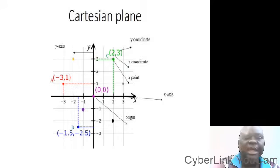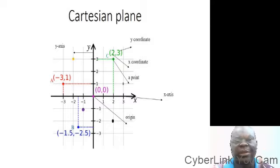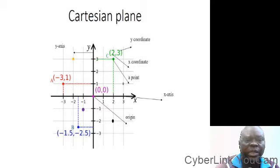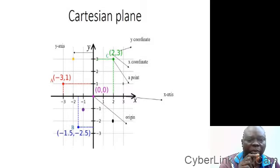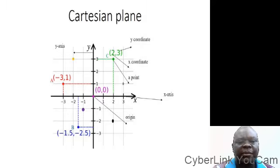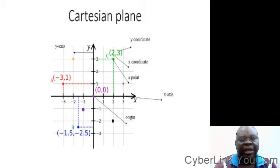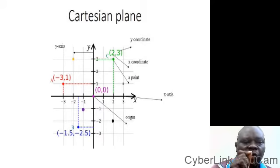Look at our Cartesian plane here in the graph. We calibrate it. From zero upward we have 1, 2, 3, and downward we have minus 1, minus 2, minus 3. And to the right on the x-axis we have 1, 2, 3, then to the left we have minus 1, minus 2, minus 3.